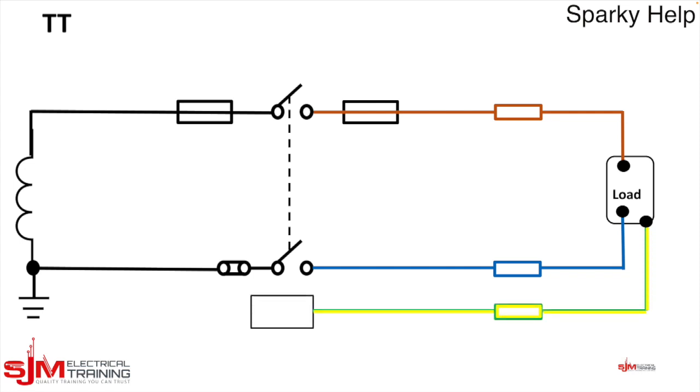We then have our CPC. Our CPC connects to the load, i.e. the metal parts. We now need to show that it is a TT system and it will go from that point down to an earth electrode.